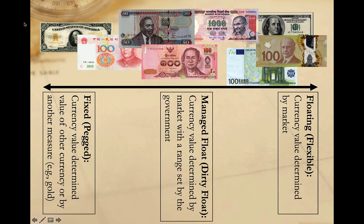Examples of managed float currencies include the Indian rupee, the Argentinian peso, the Kenyan shilling, and the Thai baht. While such systems may seem preferable — giving the flexibility of a floating system and some of the predictability and control of a fixed system — they can also be challenging to manage and at times can cause great financial distress for the government managing the currency value, as we'll see when we get to the unit on debt and development.